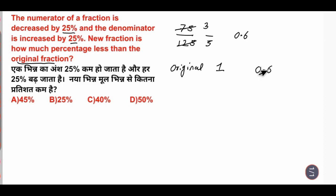The difference between them is 1 minus 0.6, which equals 0.4. To find the percentage, divide 0.4 by the original value of 1 and multiply by 100. This gives us 40%, which is option C.